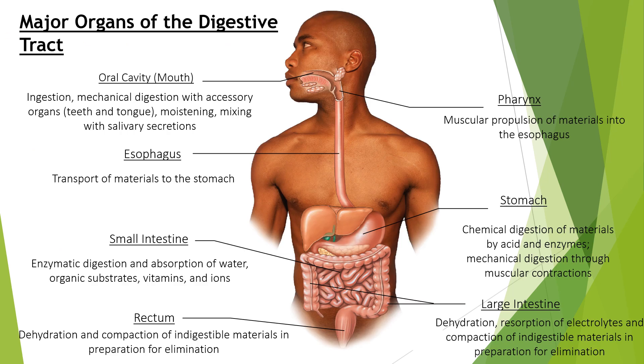The major organs of the digestive tract include the oral cavity, the pharynx, the esophagus, the stomach, the small intestine, the large intestine, and the rectum.